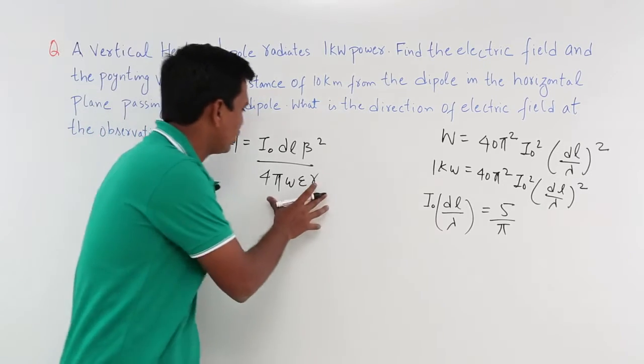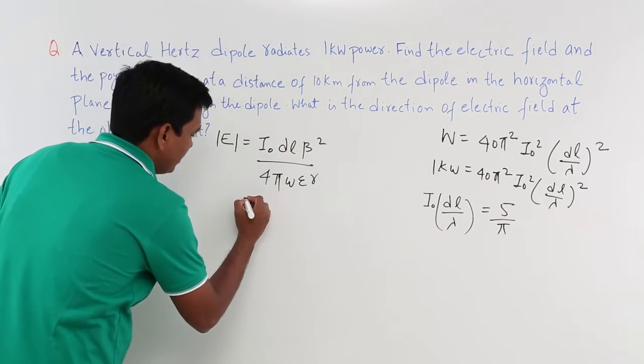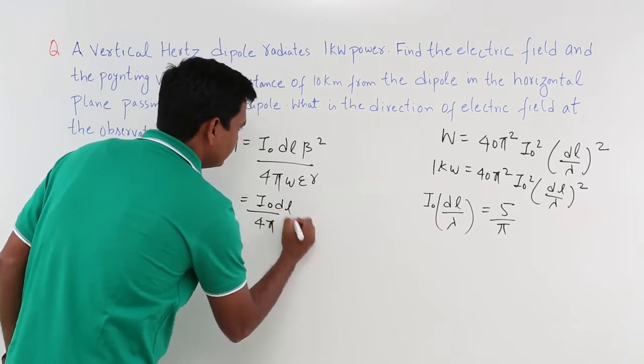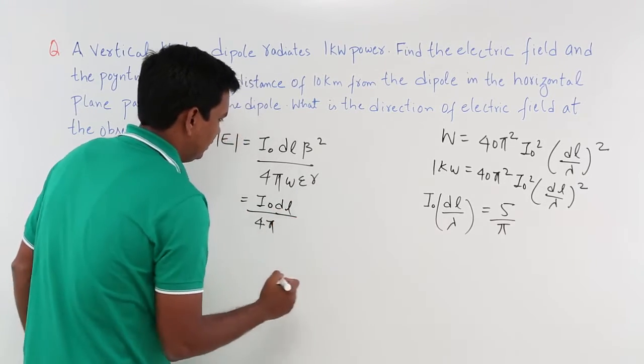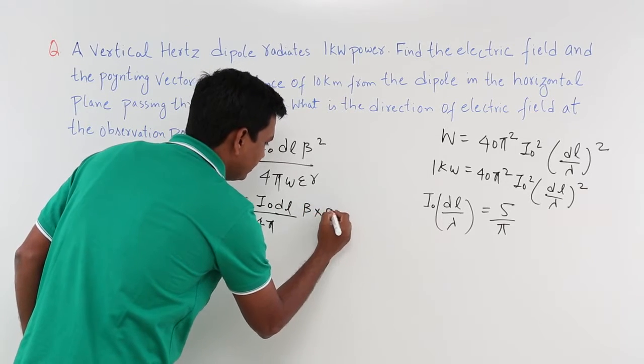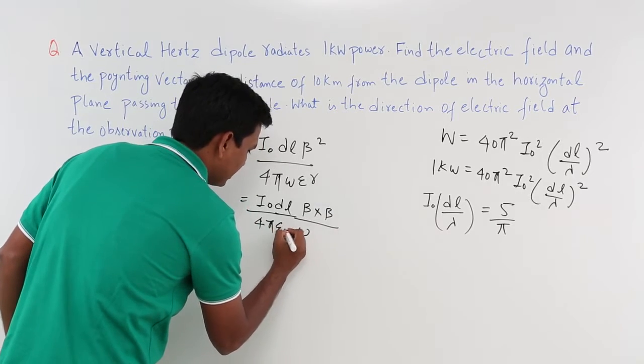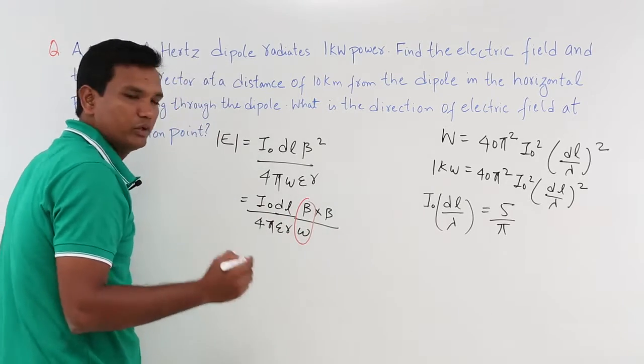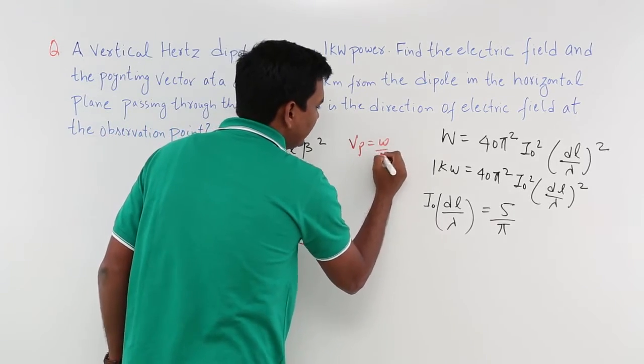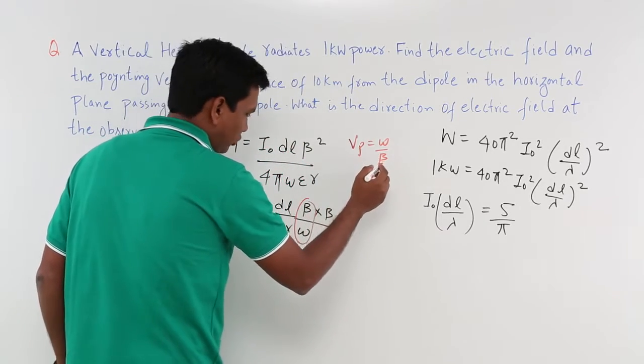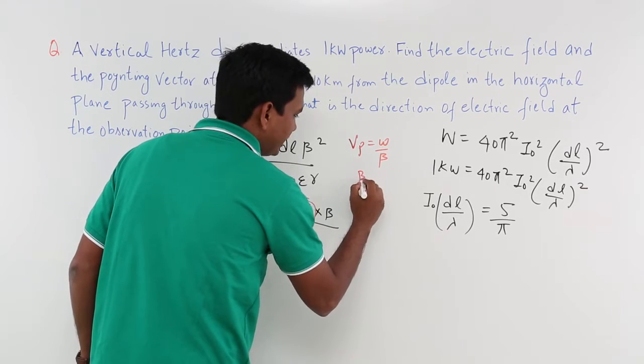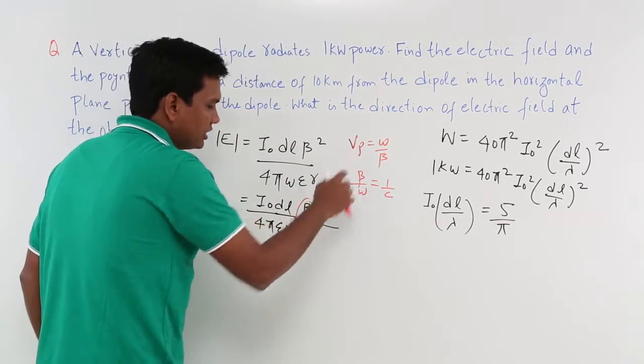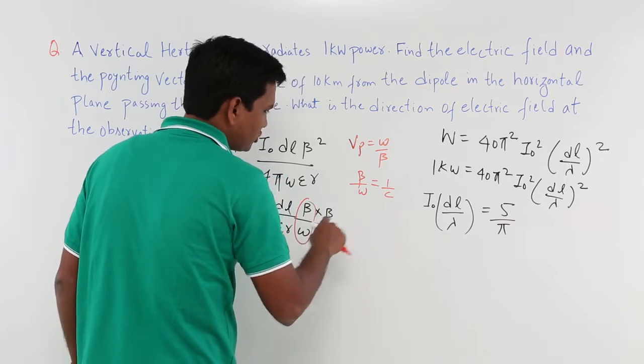What I can do is how can I solve this? I can rearrange this which comes out to be (I₀/4π)(DL)β² which I will write as β into β/(ωε₀r). But if you observe what is β/ω? We know that phase velocity is ω/β. So β/ω is vice versa. β/ω is nothing but 1/c because we are talking about free space. This comes out to be β/ω comes out to be 1/c.